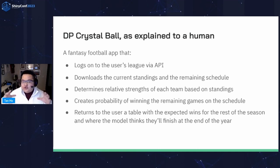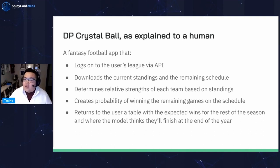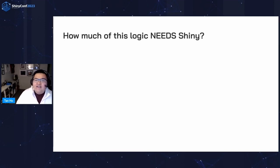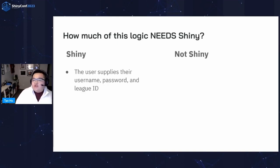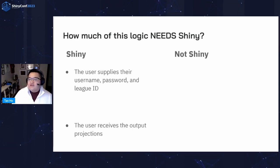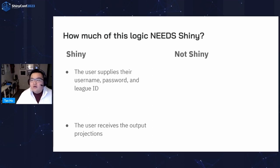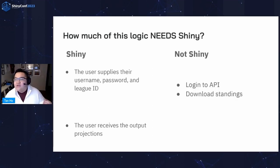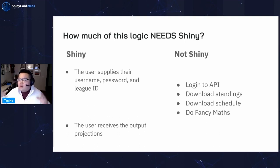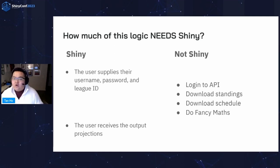What does this app actually do? It's a fantasy football app that logs onto the user's league via an API, downloads the current standings and the remaining schedule, determines the relative strengths of each team based on standings, creates probability of winning the remaining games, and returns to the user a table with expected wins for the rest of the season and where the model thinks they'll finish at year end. How much of this logic actually needs to be done in Shiny? Well, the two parts that need to be done in Shiny are: one, the user supplies their username, password, and league ID; and two, the user receives the output as a data table or download. The rest — logging into the API, downloading standings, downloading the schedule, doing the fancy math — none of that needs to be done within the Shiny app code.